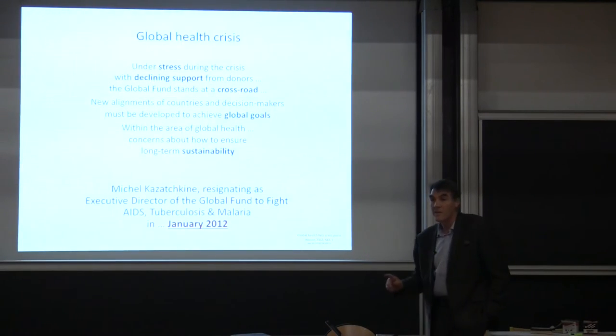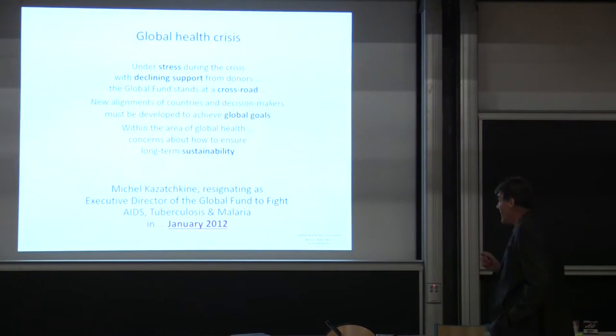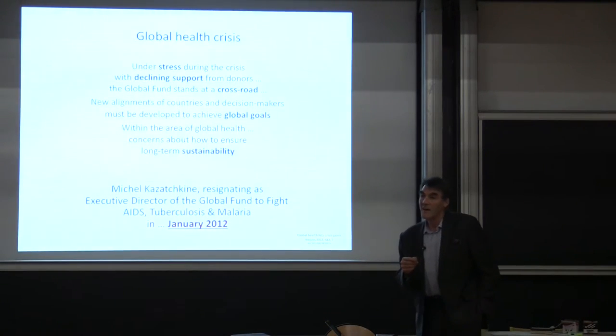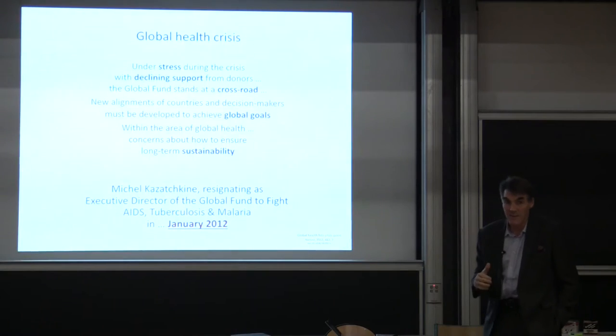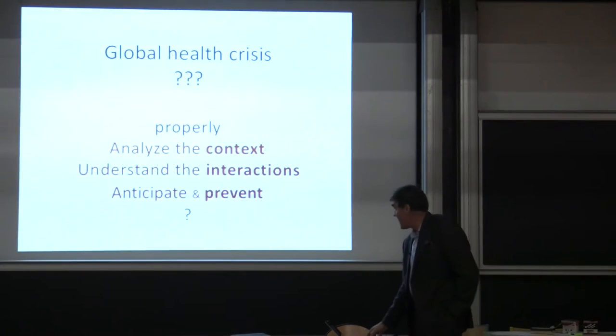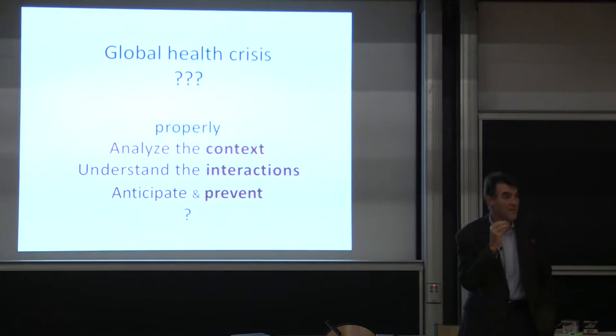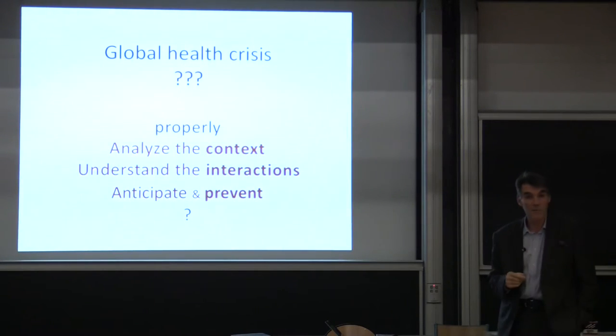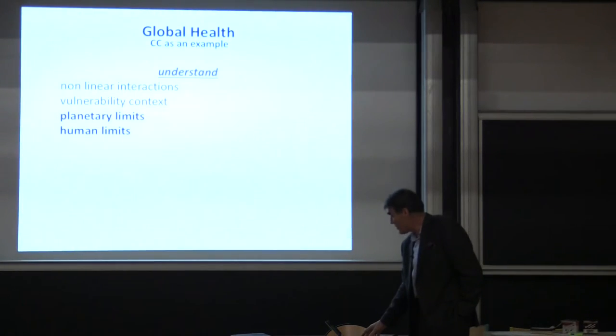The question is can we get the full picture inside of our understanding with all the interacting factors? And from those dynamics, it's also a question of what was the major factor to get that action. Is that a new process or a continuous one? And if you look at what were the arguments for that, the stress with declining support from donors, we stand at a crossroad. We need to make new alignments of countries and decision makers to achieve these global goals in global health, with major concern how to ensure the long-term sustainability of that. You would say, well, that's the right perspective for 2021. In fact, this was the letter of dismissal from Michel Kazatchkin, who was the head of the Global Fund for AIDS, Tuberculosis and Malaria, ten years ago. Ten years ago, crisis. Again, crisis.